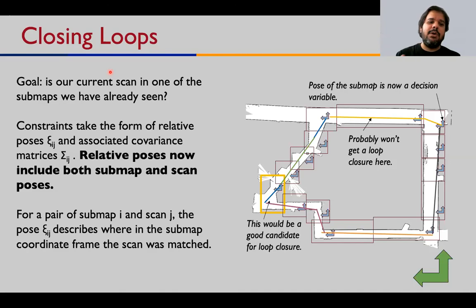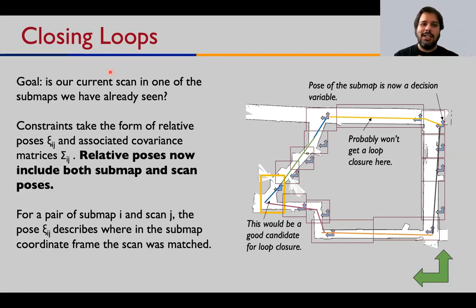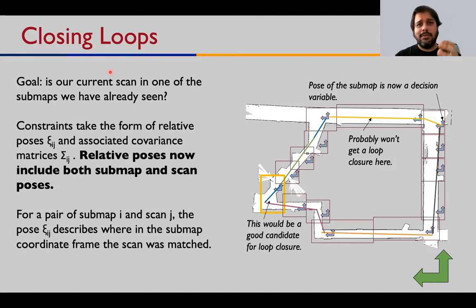The global SLAM has two goals: stitching sub-maps together and solving loop closure — determining whether the current scan or sub-map has been seen before in any previous sub-map. This is the core of what makes Cartographer effective for building globally consistent maps.